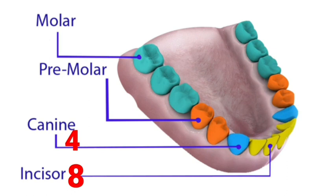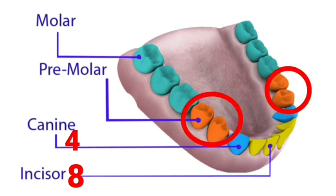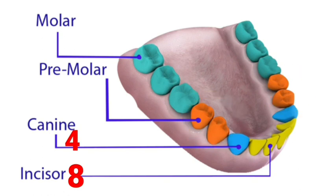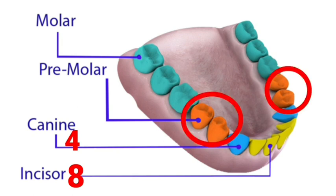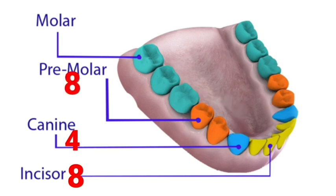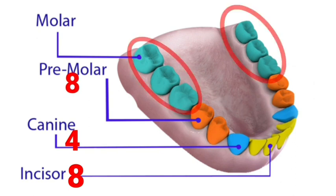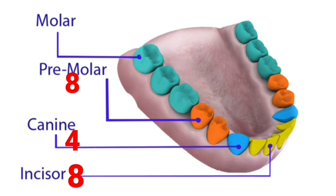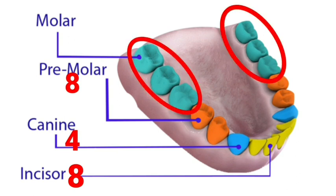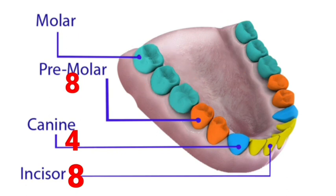The broad teeth next to the canines are called premolars or cracking teeth. They act as nutcrackers. An adult has 4 premolars in each jaw, making a total of 8. The teeth at the back of the jaw are called molars or grinding teeth. They are broader than the premolars and have a broad upper surface to grind food. An adult has 6 molars in each jaw, totalling 12.